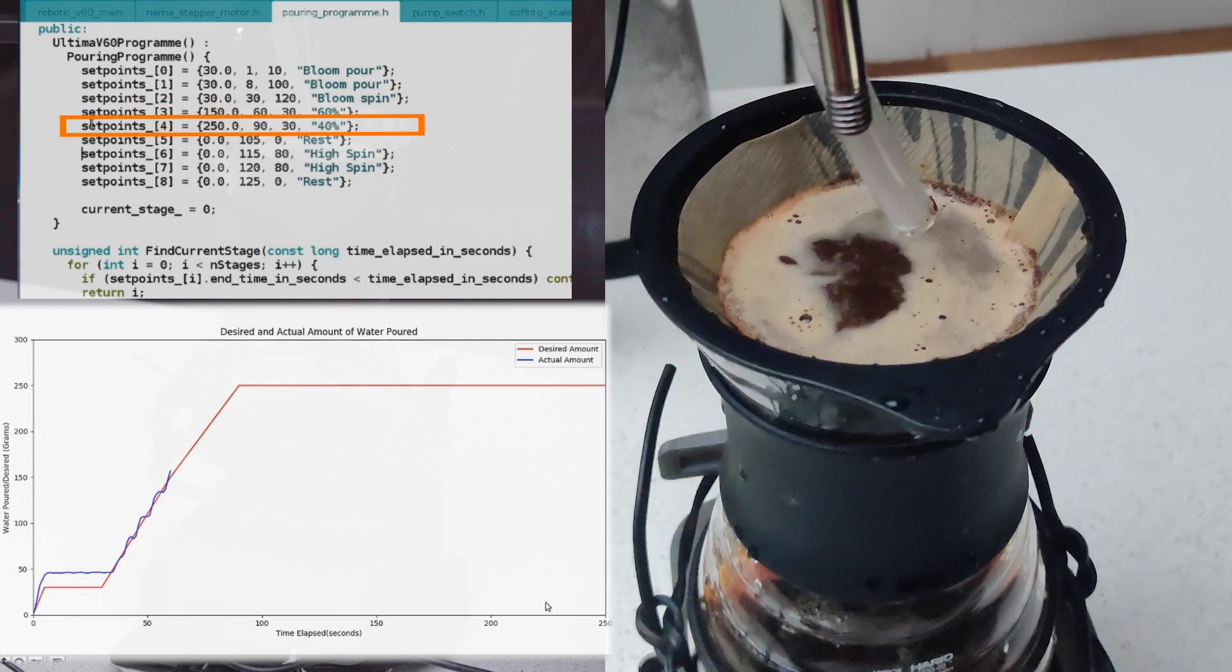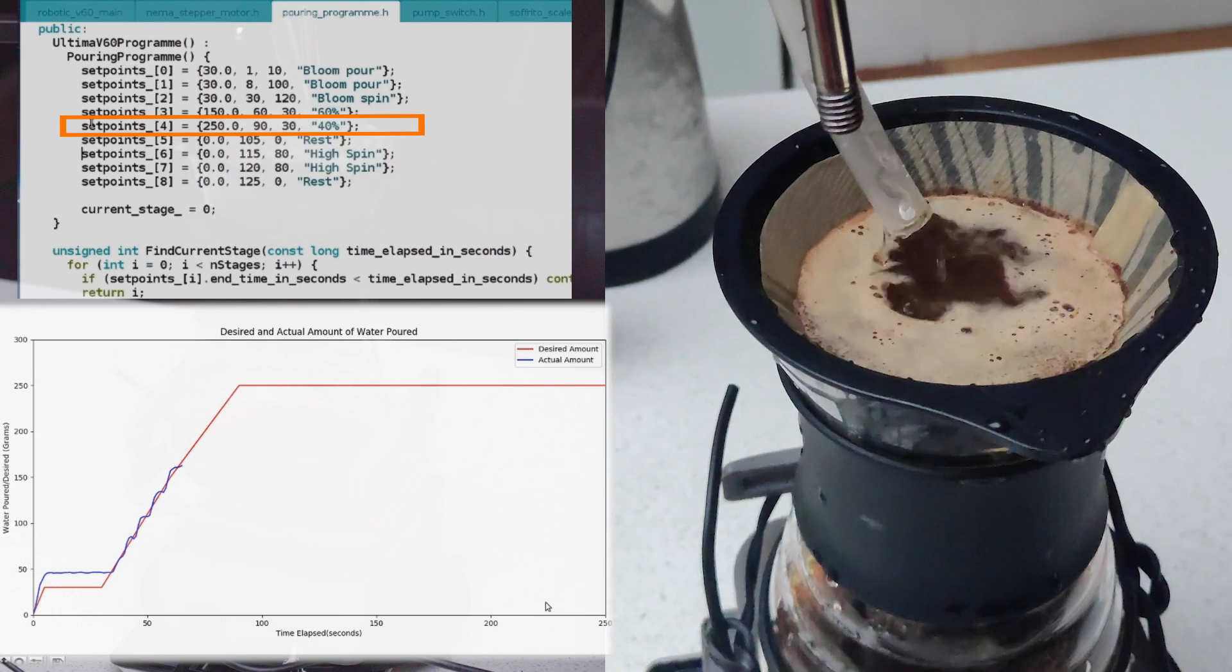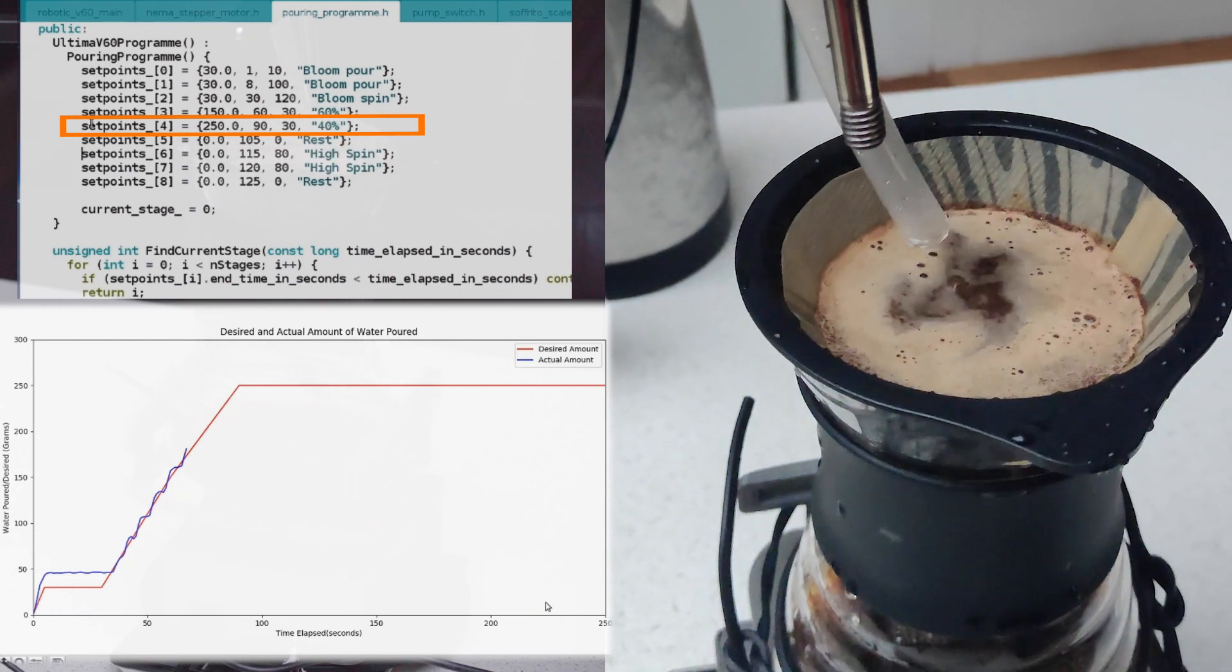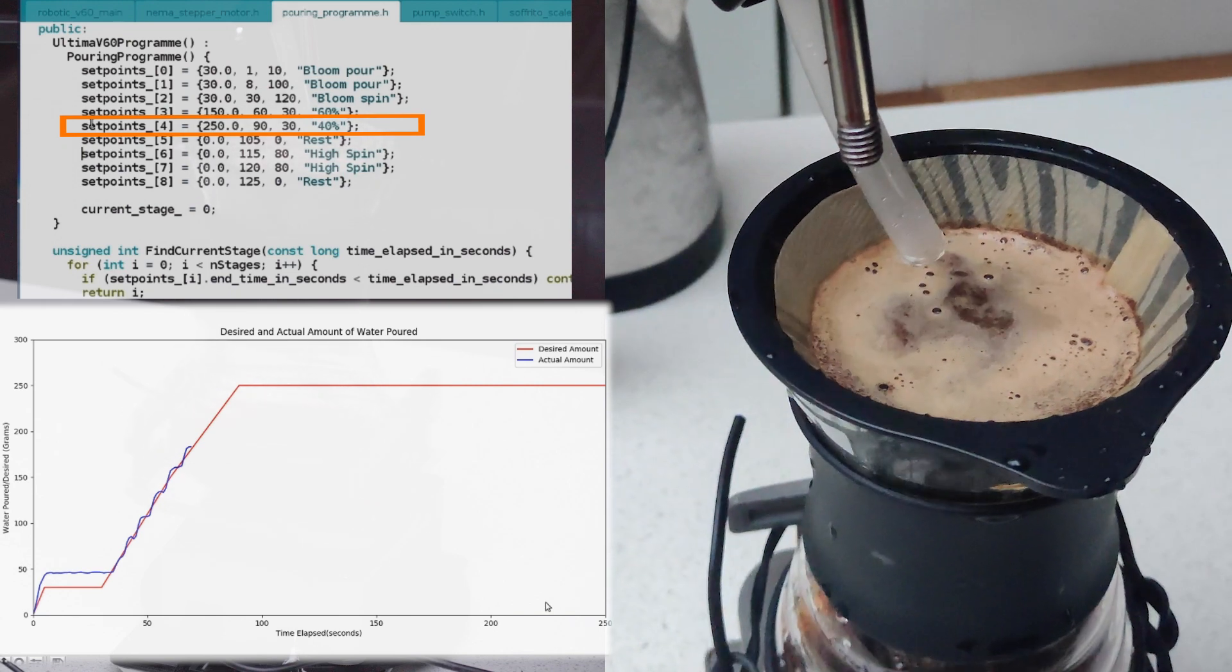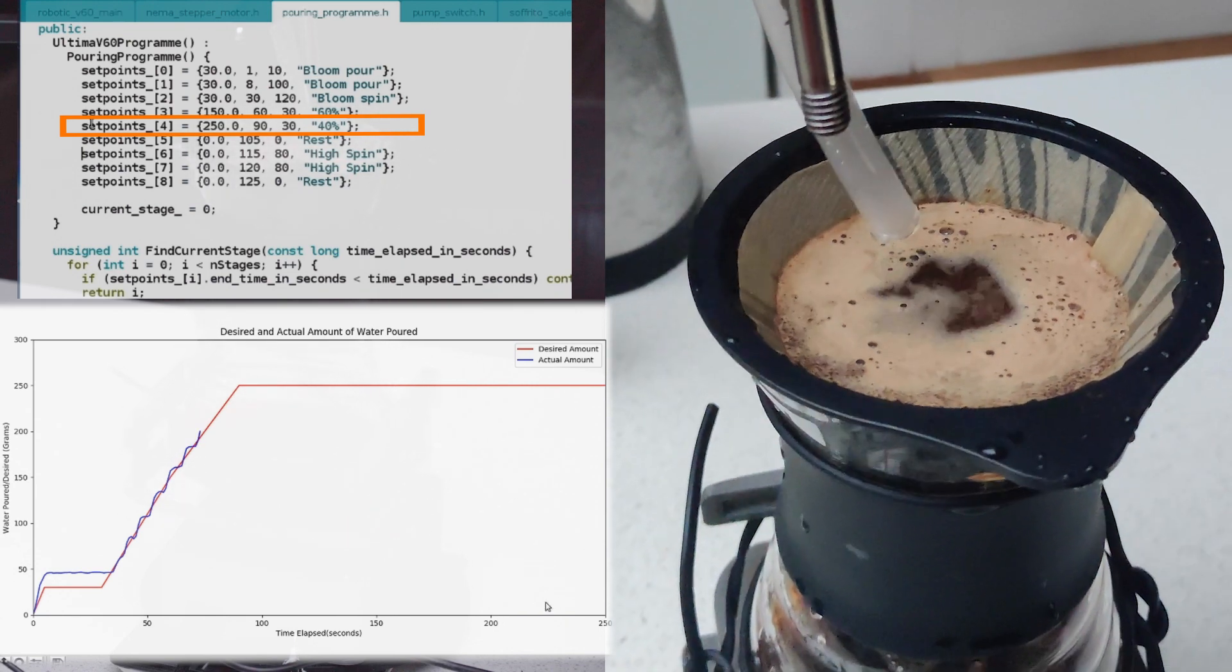And because the pump is inherently capable of pumping faster than the red line, we see this zigzag pattern form where whenever the pump pours the blue line is steeper than the red line and it flattens out once the controller deactivates the pouring again.